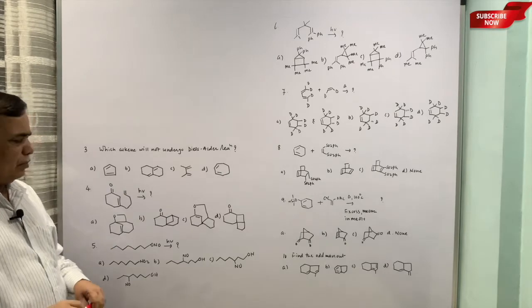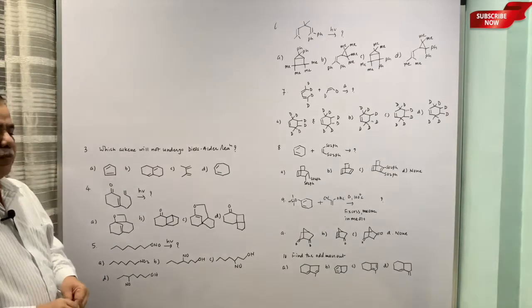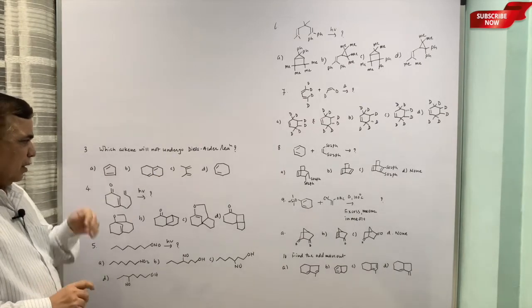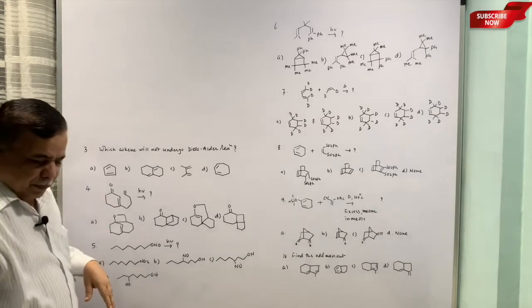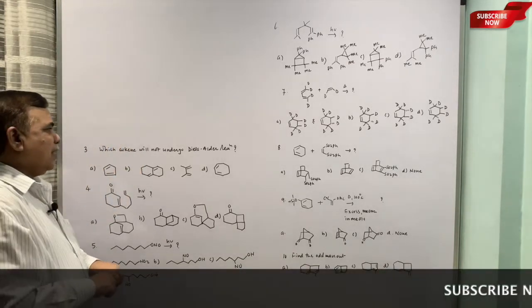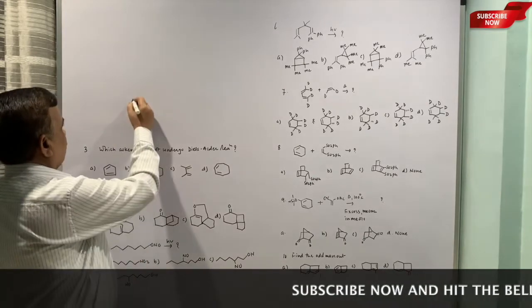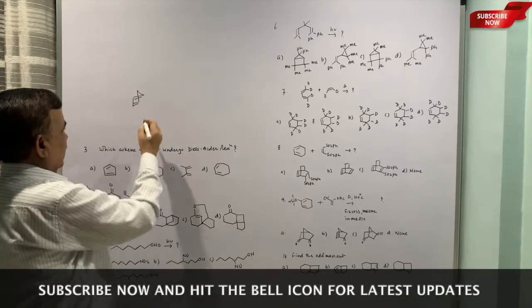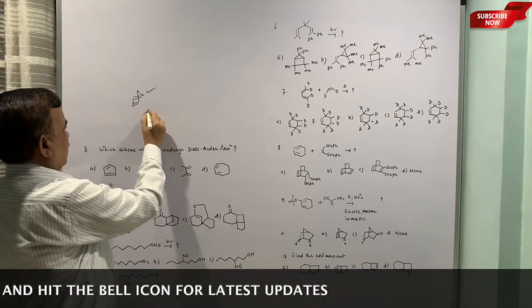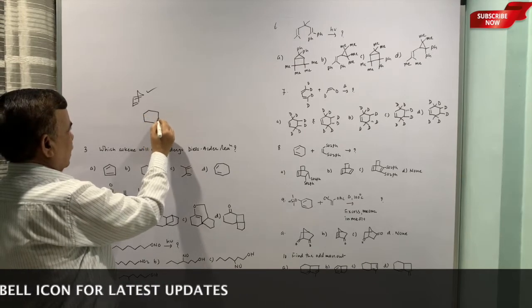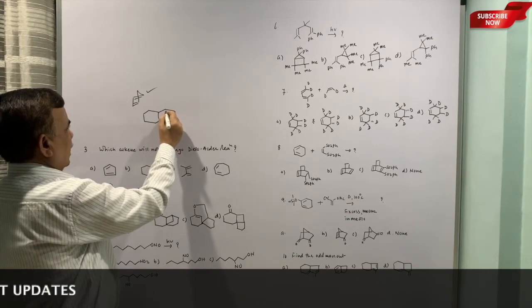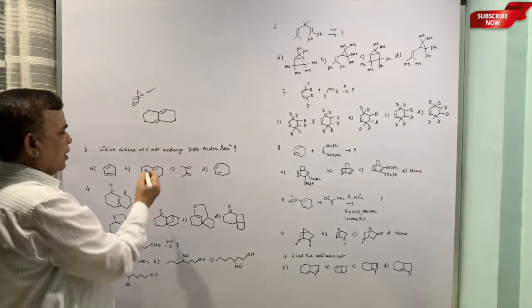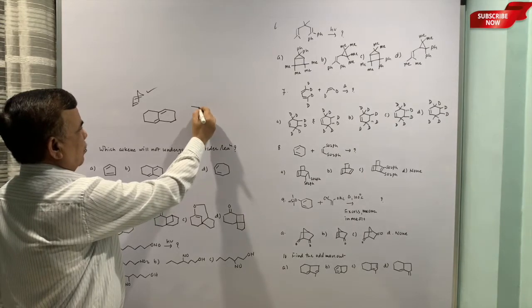The third one: which alkene will not undergo Diels-Alder reaction. Now in Diels-Alder reaction we know that there are two components, one is diene, the other one is dienophile. So assuming that dienophile is proper, we have to say that these dienes are going to react and the odd one is not going to react. So the first one is this cyclopentadiene, this will react. The second is difficult to react.